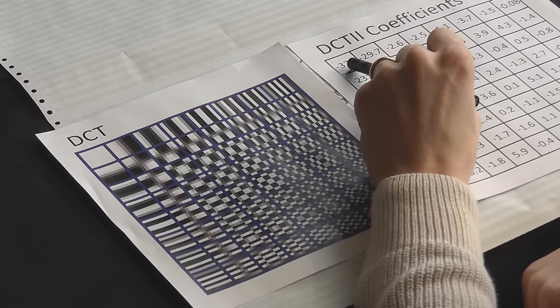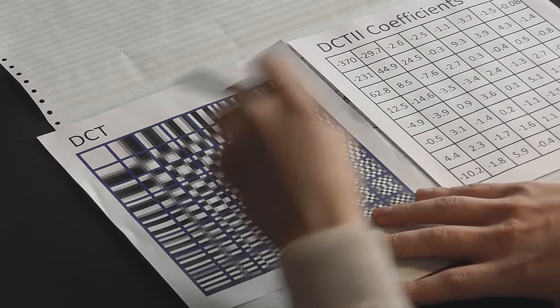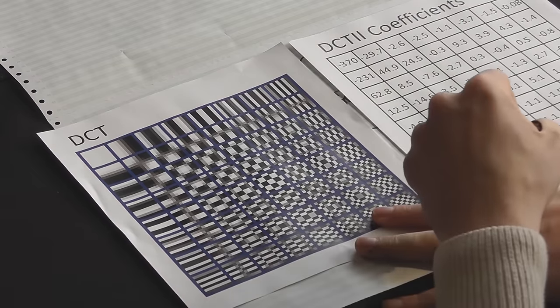Usually, this top left coefficient is much bigger than the others. Because it's flat and not a cosine wave, it represents the general intensity of that particular image block. So this is called our direct current coefficient, our DC coefficient. All of the others are alternating current, AC coefficients. In practice, usually the DC coefficients are stored separately, but we won't dwell on that too much.